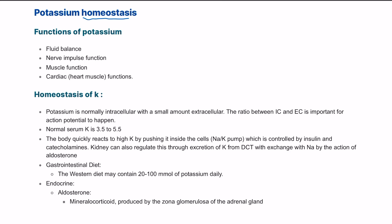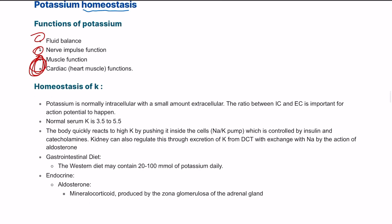Potassium is quite important for maintaining fluid balance. It is also important for nerve impulse transmission and for muscle contraction, including cardiac muscle, smooth muscle, and voluntary muscle contraction. So it is important for muscles, nerves, and fluid balance.